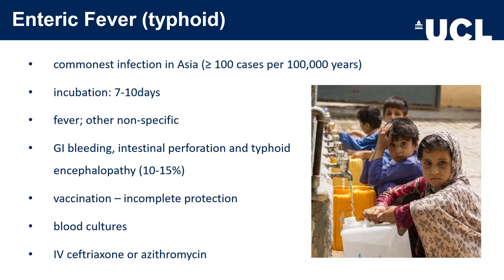Blood cultures have the highest yield within a week of symptom onset, with a sensitivity of 40 to 80% — possibly higher with modern technology. Stool and urine cultures become positive after the first week with a pickup rate of up to about 60%. When the patient's condition is unstable, treatment should be started empirically pending results. There is increasing fluoroquinolone resistance and intravenous ceftriaxone is now preferred as the first-line agent for enteric fever; azithromycin is an alternative.